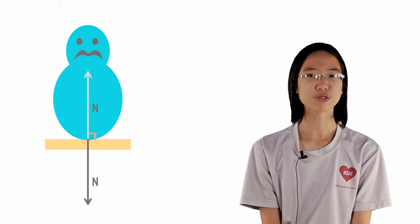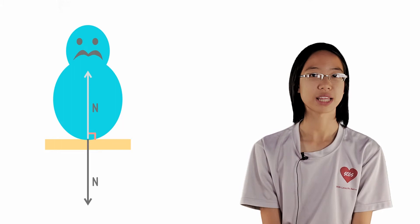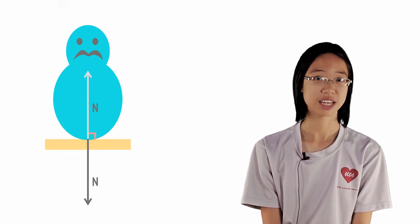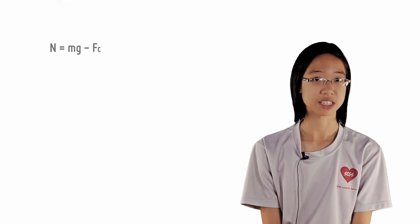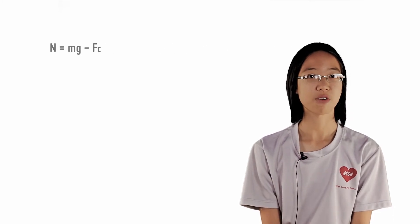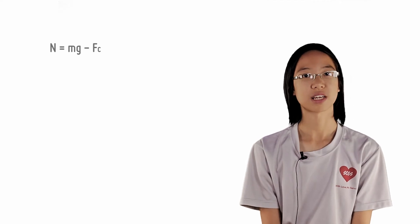At the equator, your true weight has to provide the centripetal acceleration to allow you to undergo circular motion. In equations, n equals mg minus fc, where fc represents the force required to keep the body in circular motion, which acts towards the centre of the Earth.